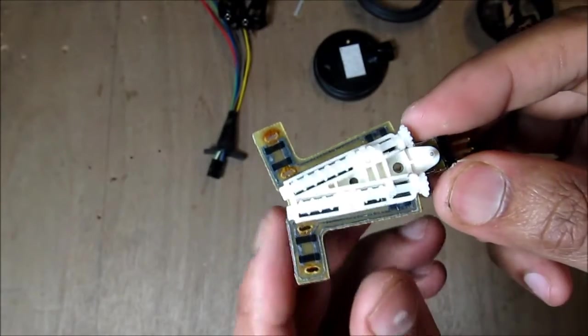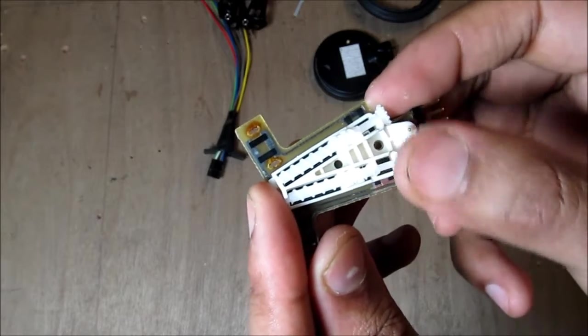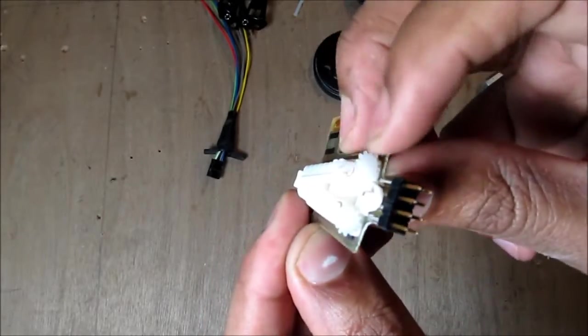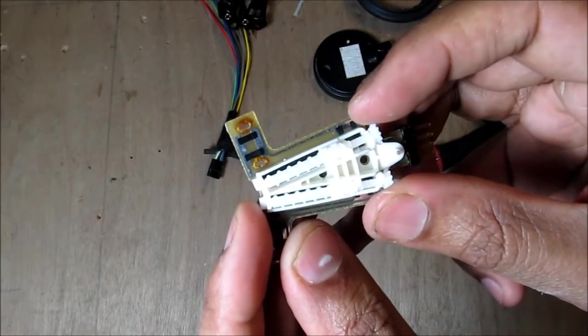This closed loop feedback system is actually more reliable than the one in the Honda because it's away from the elements, as well as it's integrated directly into the drivetrain as opposed to being attached to the mirror directly.